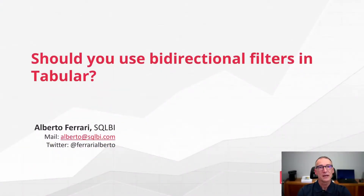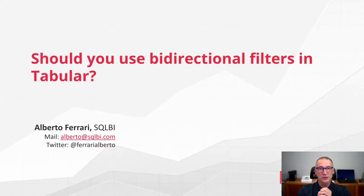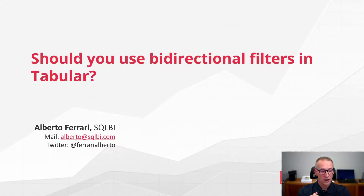Ciao friends! In this short session I want to answer a very important question: should you use bi-directional relationships in your tabular model or not? Well, the quick answer is no, you should not — unless you know exactly the drawbacks of using bi-directional cross filters.